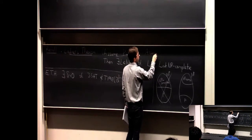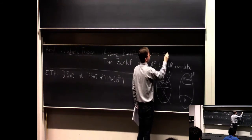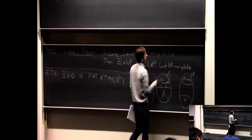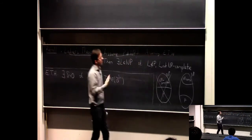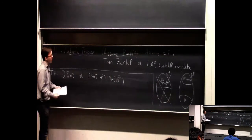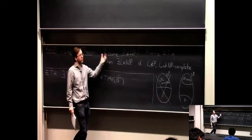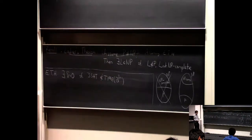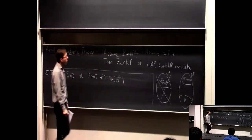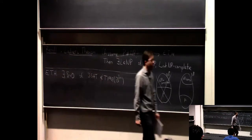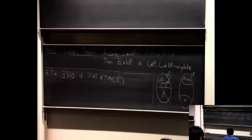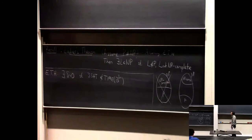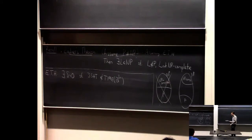Once we finish the proof, we'll see that you don't need an assumption as strong as ETH — you can get away with an assumption which is just a little bit stronger than P does not equal NP. So what is this mystery language going to be that is not solvable in polynomial time but also not hard enough to be NP-complete?